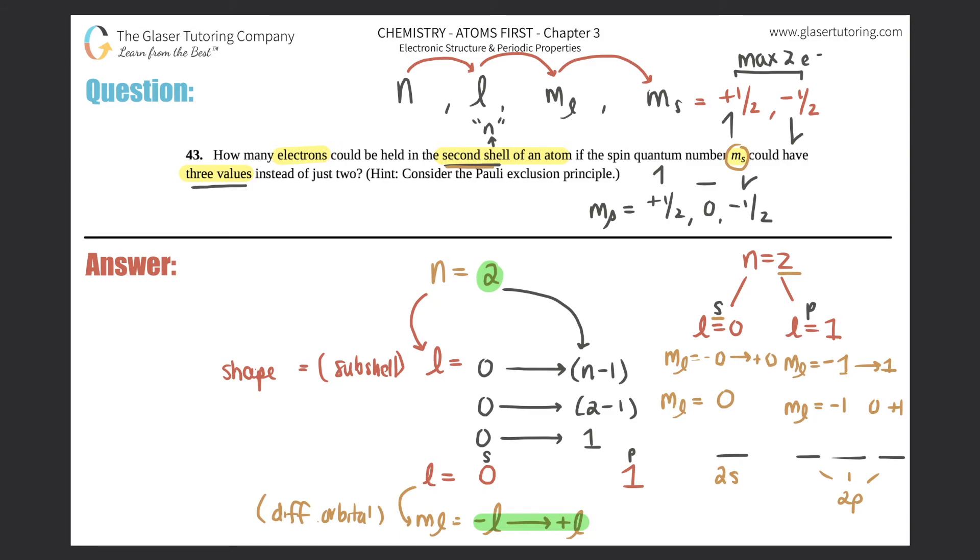So for each one you would have the up, down, and the swoosh one. One, two, three. One, two, three. One, two, three. How many total electrons are here? One, two, three, four, five, six, seven, eight, nine, ten, eleven, twelve. There you go.